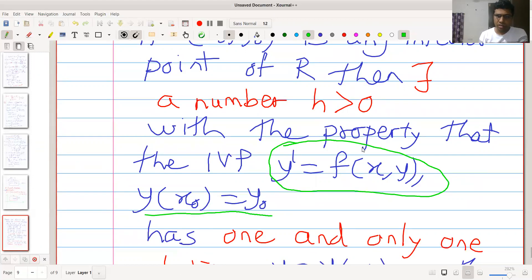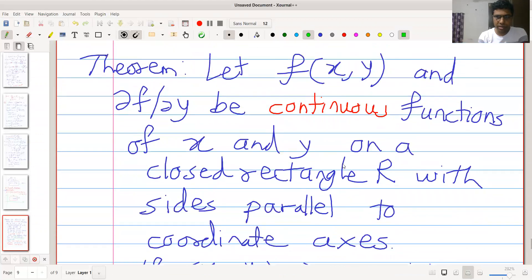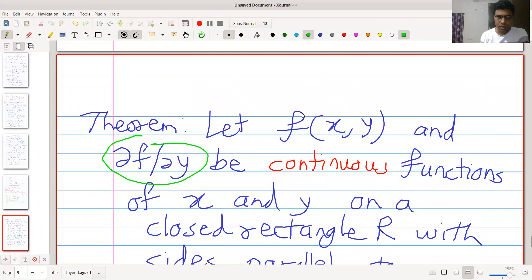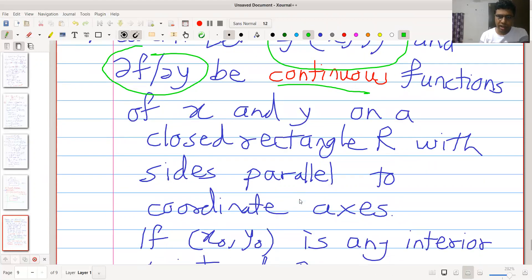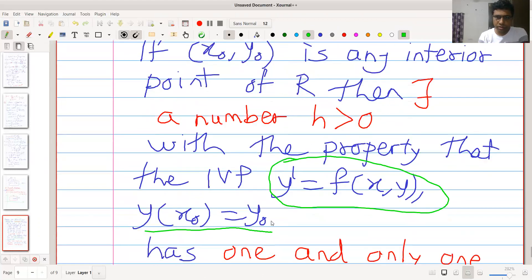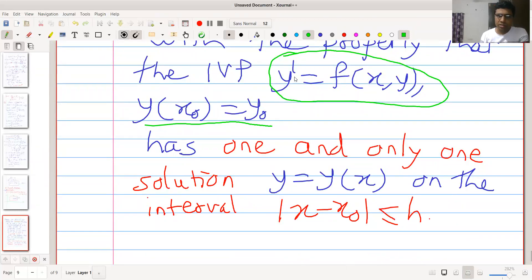and this function f and its first partial derivative, that is ∂f/∂y, if these two are continuous functions on rectangle R containing the point (x₀,y₀), then there exists a solution to this initial value problem. Further, this solution is unique. We have seen some examples of differential equations where solution is not unique, there are number of solutions. So here uniqueness is guaranteed, one and only one solution exists.